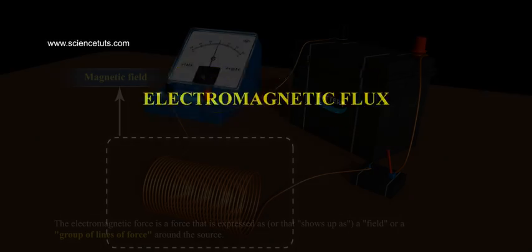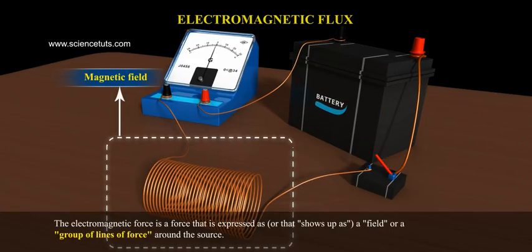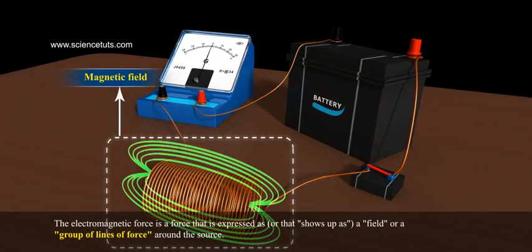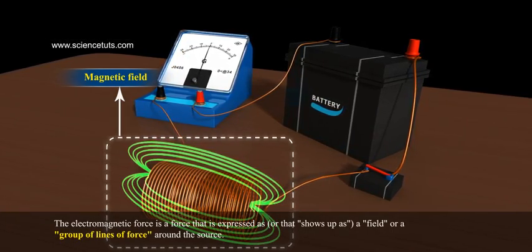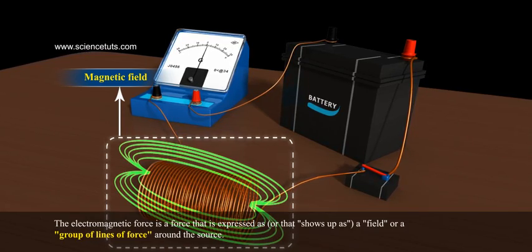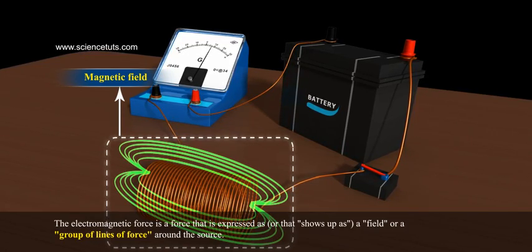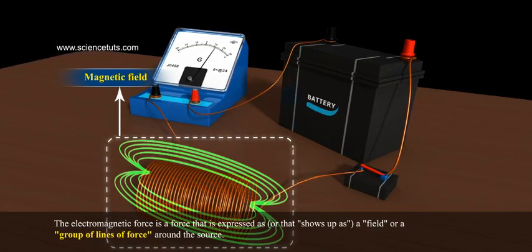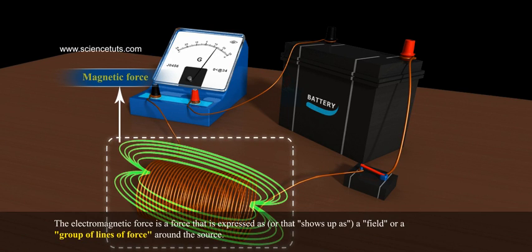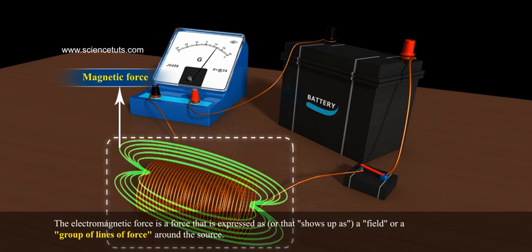Electromagnetic flux. The electromagnetic force is a force that shows up as a field, or a group of lines of force around the source.